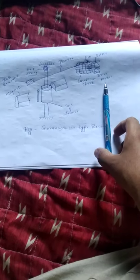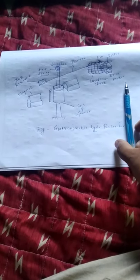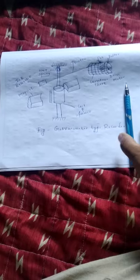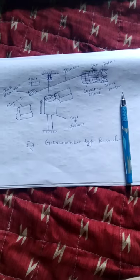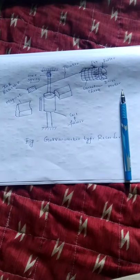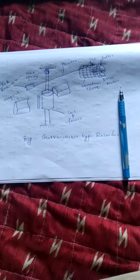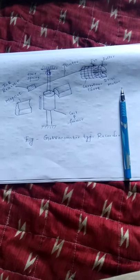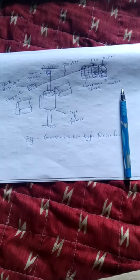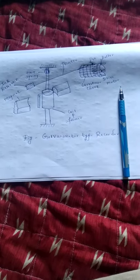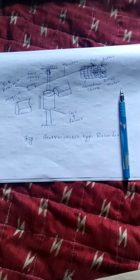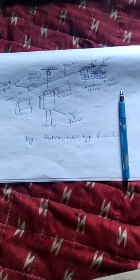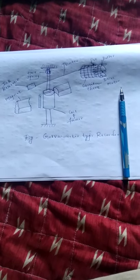Next we will move on to the working principle of the galvanometer type recorder. This type of strip chart recorder operates on the deflection principle. The deflection is produced by a galvanometer which produces a torque on account of current passing through its coil. This current is proportional to the quantity being measured.